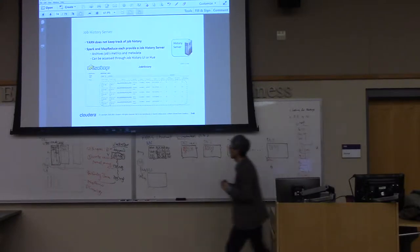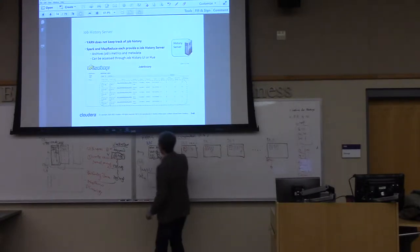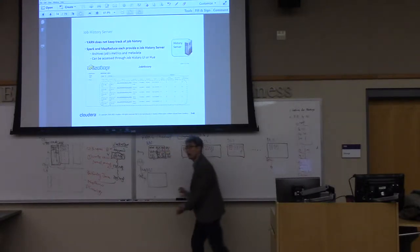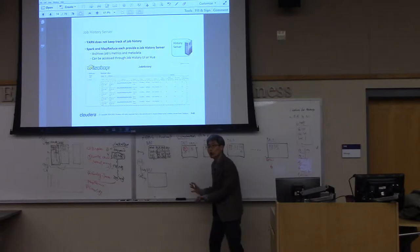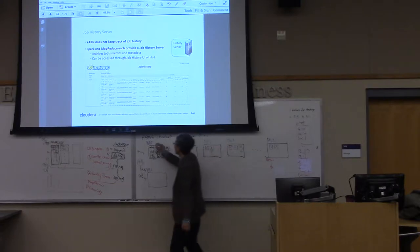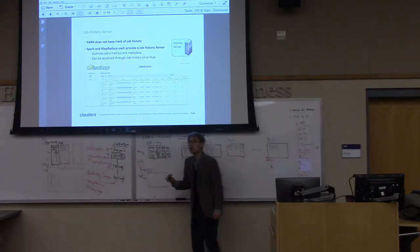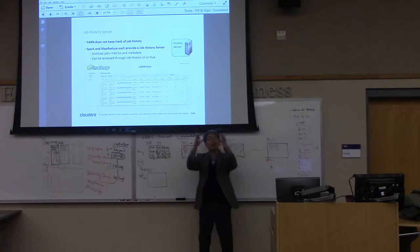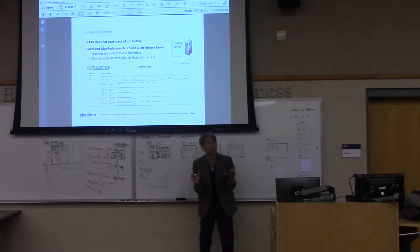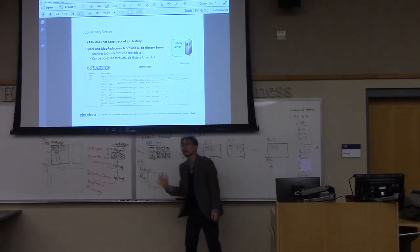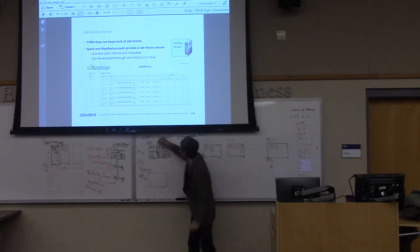I'm pretty much sure. So, when you submit this MapReduce job, in the naming node, there is a job tracker. It's kind of a master process. For each job that you are going to submit, there is a job tracker.